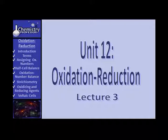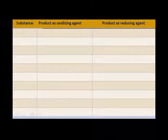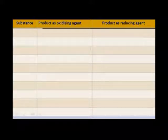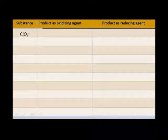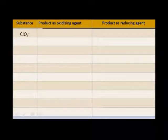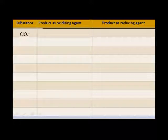Oxidation Reduction Lecture 3. Here's your table — the left side is filled out, but we're going to take it one item at a time. Let's start with the perchlorate radical. The perchlorate radical has oxygen with a negative 2 — and what is the charge on chlorine? It's plus 7. Can it act as an oxidizing agent? Can it gain electrons? Yes, it can.